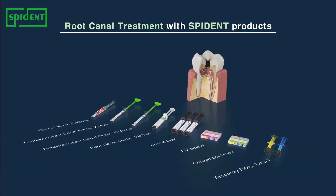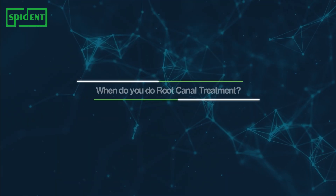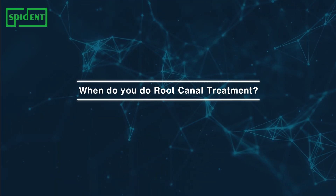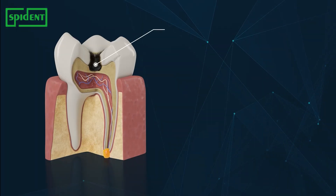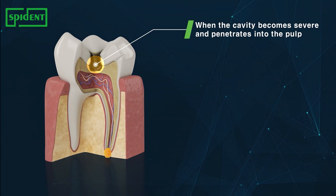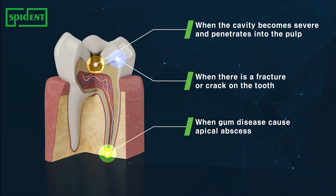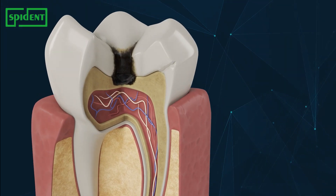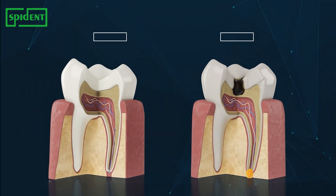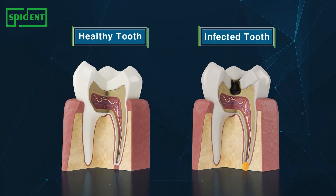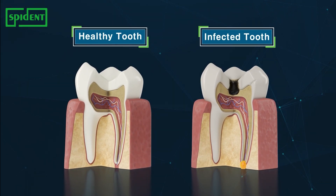Root canal treatment with Spident products. When do you do root canal treatment? When the cavity becomes severe and penetrates into the pulp, when there is a fracture or crack on the tooth, when gum disease causes apical abscess, or when the pulp becomes inflamed or infected.